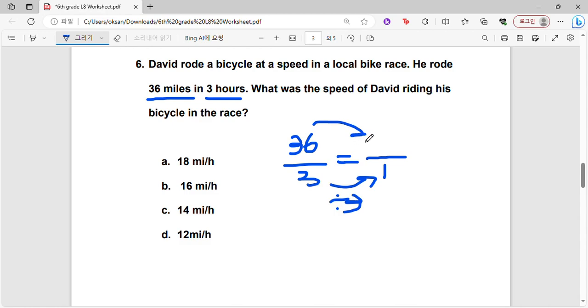Divide 3 on top. 36 divided by 3 is 12. So D is the correct answer.